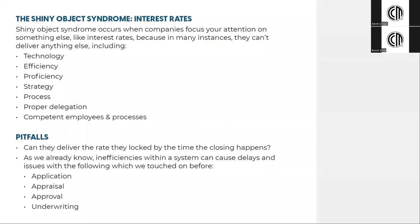Let's talk about the shiny object syndrome, which I had mentioned earlier in relation to interest rates. What does this term mean and how does it relate to your mortgage? Shiny object syndrome occurs when companies neglect what's really important because they're focusing your attention on something else — specifically, the supposed fantastic rate.